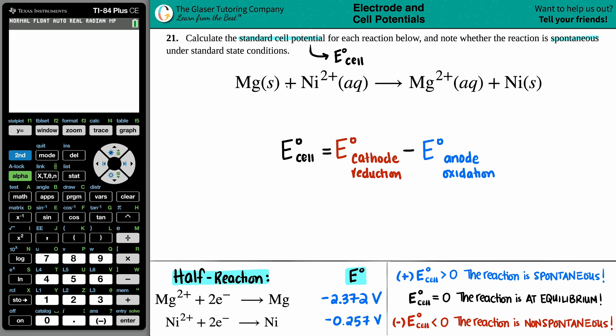Now we can't find an E cell without standard values. So I went in the back of the textbook to find out the two half reactions that correlate with the reaction here. But now we just got to figure out which one is the cathode and which one is the anode.